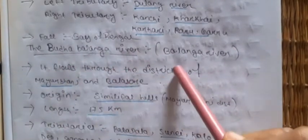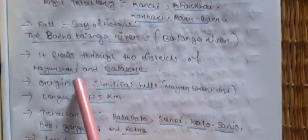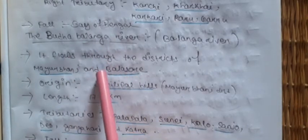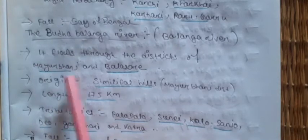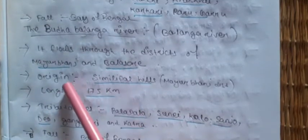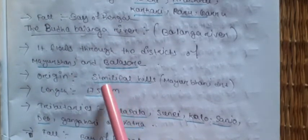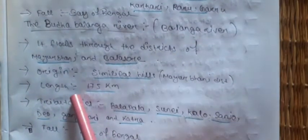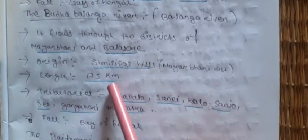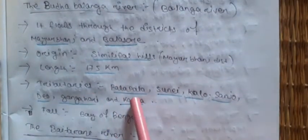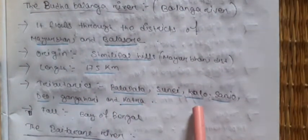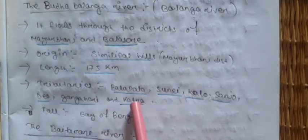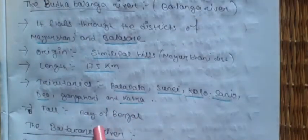Budha Balanga river, also known as Balanga river, flows only through Odisha state — through Mayurbhanj and Balasore districts. Its origin is in the Simlipal hills in Mayurbhanj district. Total length is 175 km. Its tributaries are Palpana, Sunayi, Kalo, Sanjyo, Deo, Gangahari, and Katra. It finally falls into the Bay of Bengal.